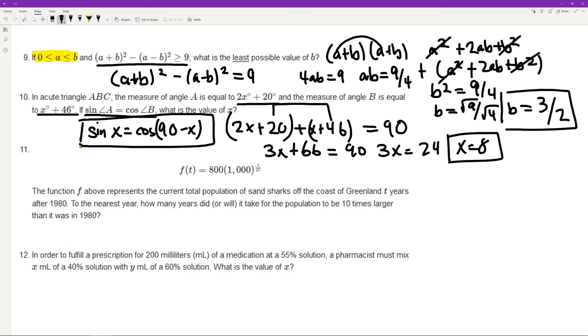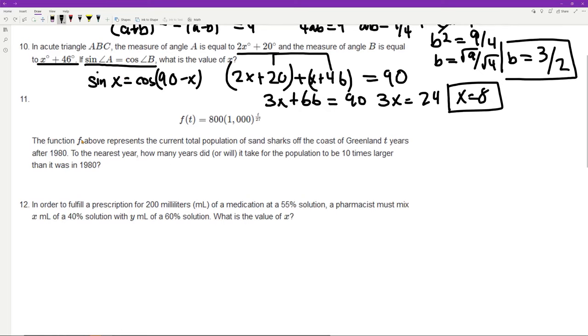Also, the function f above represents the current total population of sand sharks off the coast of Greenland t years after 1980. To the nearest year, how many years did or will it take for the population to be 10 times larger than it was in 1980? So this is going to be an exponential function. And if you remember, exponential functions are going to be a·b^x, or let's just separate the a and the b, so a·b^x. So in this case, what we have is a as the initial value, and that's going to be 800.